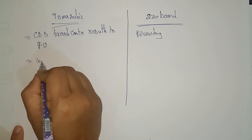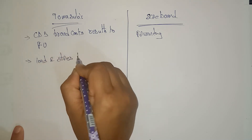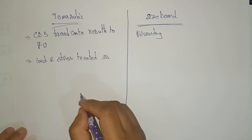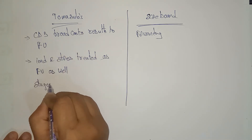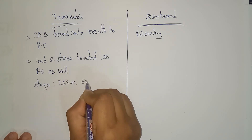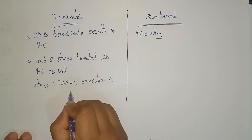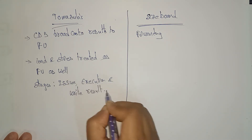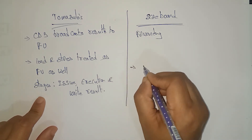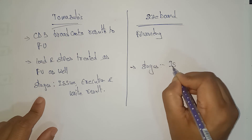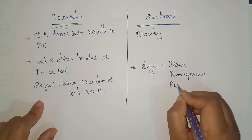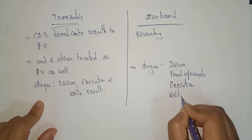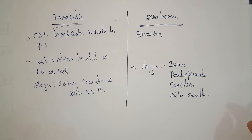In Tomasulo's algorithm, loads and stores are treated as functional units as well. There are three stages: issue, execution, and write result. In scoreboarding there are four stages: issue, read operands, execution, and write results. This is a main difference between scoreboarding and Tomasulo's algorithm.